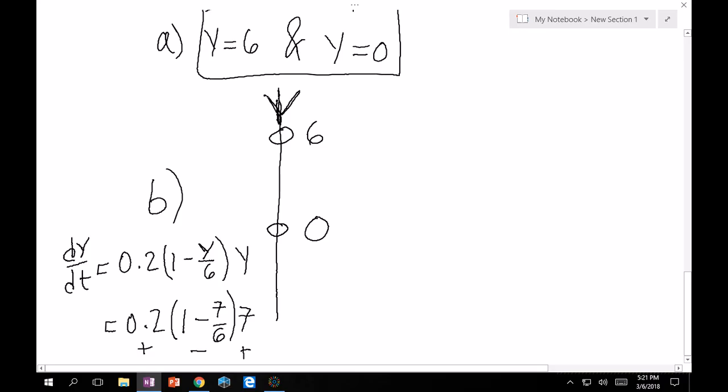Now let's do the same thing between 0 and 6. And now, because I just showed you I don't care about values, I care about signs, I'm going to choose 1. And then I'm going to see 0.2 is, so if I choose y equals 1, then I'm going to get 0.2, that's a positive number, times (1 minus 1/6), that's a positive number, times 1, that's a positive number. So positive times positive times positive is positive, so I draw an up arrow.